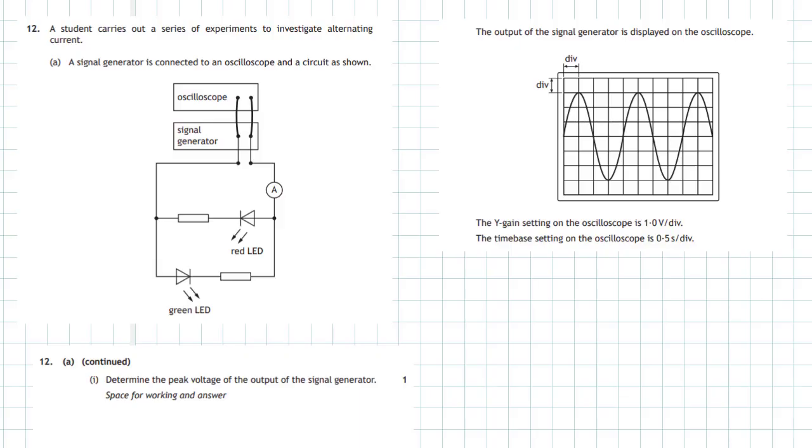Question 12 of Section 2 of the 2018 Higher Physics Examination. A student carries out a series of experiments to investigate alternating current. A signal generator is connected to an oscilloscope and a circuit as shown. We can see the oscilloscope connected to a signal generator and a circuit here which has a red LED, a green LED, two resistors, and an ammeter.